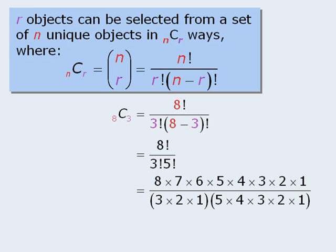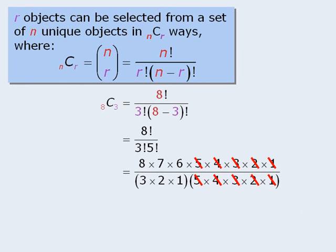From here we can expand the factorials, at which point we can cancel out some of the numbers in the numerator and the denominator. We'll begin by cancelling the 5s, 4s, 3s, 2s, and 1s from the top and bottom, and when we do this we get the following.